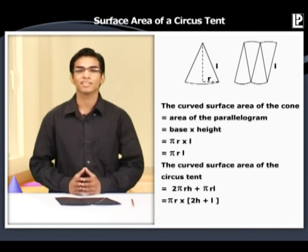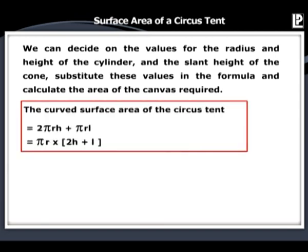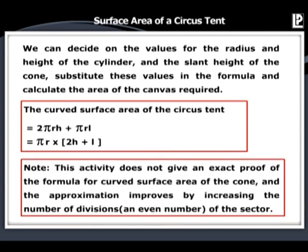This is how we find the surface area of a circus tent. We can decide on the values for the radius and height of the cylinder and the slant height of the cone, substitute these values in the formula, and calculate the area of the canvas required. Please note that this activity does not give an exact proof of the formula for the curved surface area of the cone, and the approximation improves by increasing the number of divisions, which is an even number of sectors.